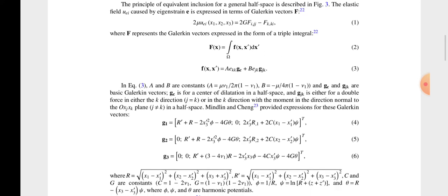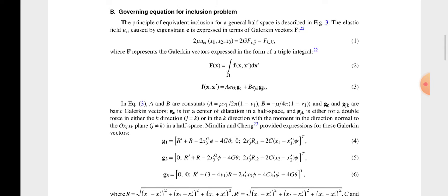The governing equation by inclusion problem will be shown here. The principal equivalent inclusion for the general half space described in the figure. So 2 mu u E1 in bracket x1, x2, x3 is 2 g fijj minus fkki. We represent the Galerkin vectors expressed in the form the triple integral. A and b are constants: A is equal to mu v upon 2 pi 1 minus v1 beta, b is mu upon 4 pi 1 minus v1, and gc and gjk are basic Galerkin vectors.